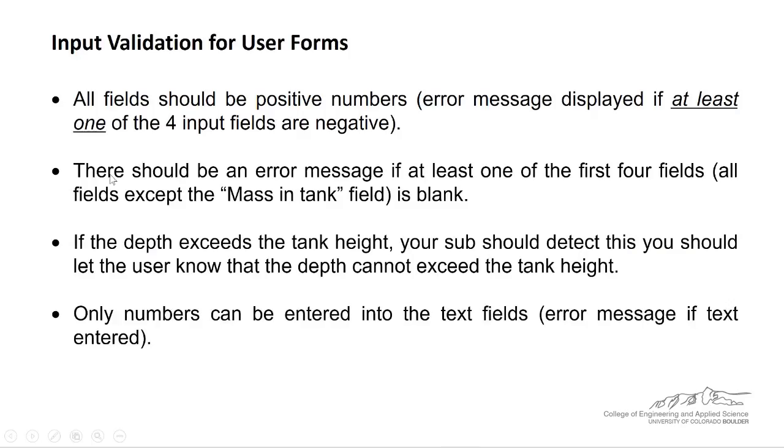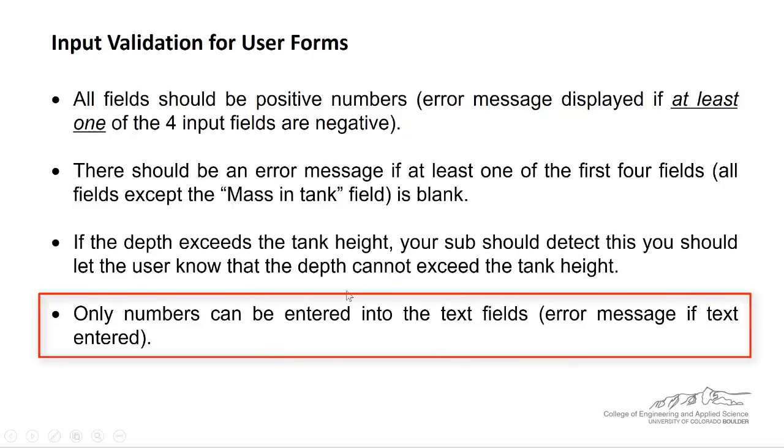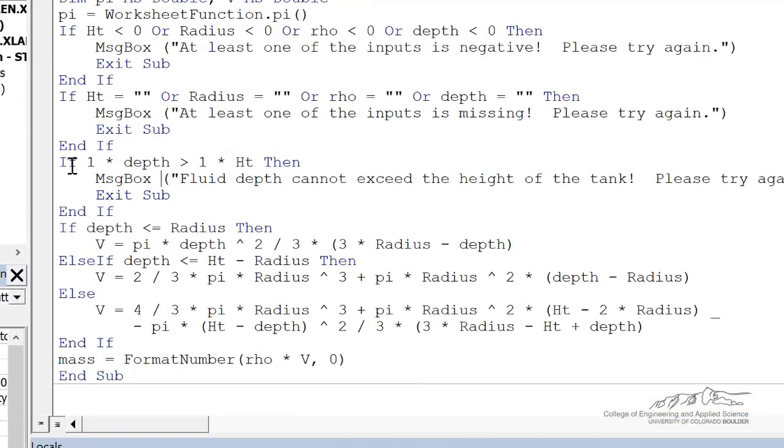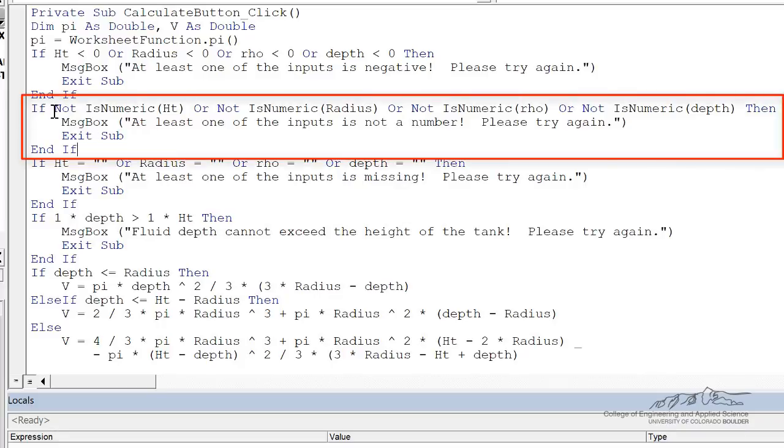The last thing we're going to do is we're only going to accept numbers that are entered into the text fields, and we're going to enter an error if text is entered. And I'm actually going to put this a little bit higher in the code. I've placed it up here, and I'm using this isNumeric. IsNumeric of a number will be true, so if any of these height, radius, rho, or depth are not numbers,